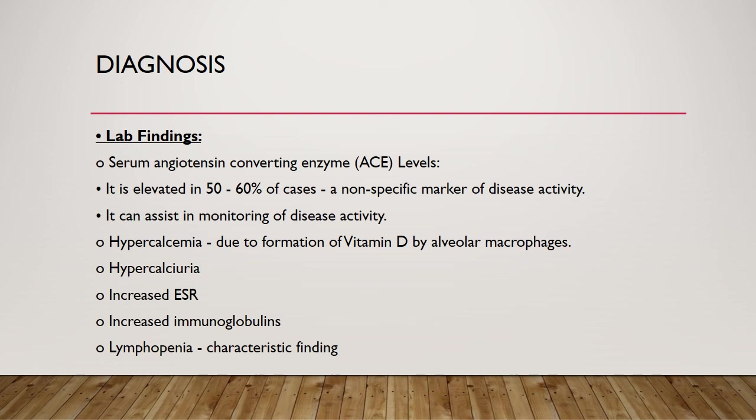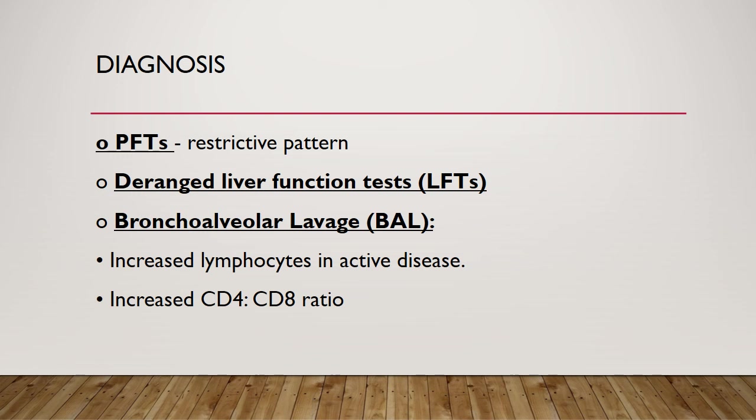Hypercalcemia will be present due to the formation of vitamin D by alveolar macrophages, and hypercalciuria occurs because of increased production and secretion of calcium. There will be increased ESR and increased immunoglobulins due to the inflammatory process. Lymphopenia is a characteristic finding — if you see bilateral hilar lymphadenopathy along with lymphopenia, it indicates a case of sarcoidosis.